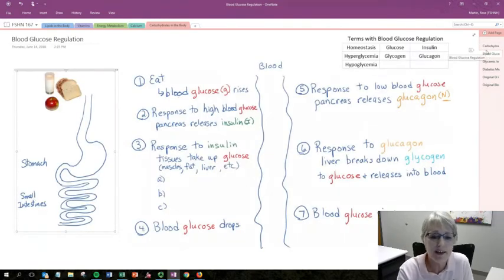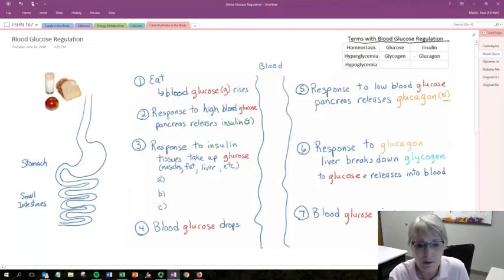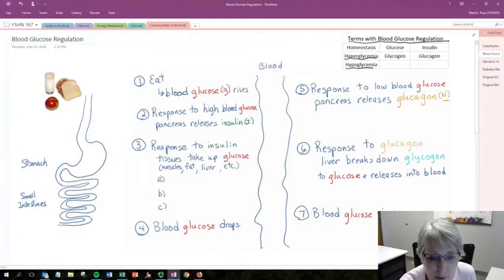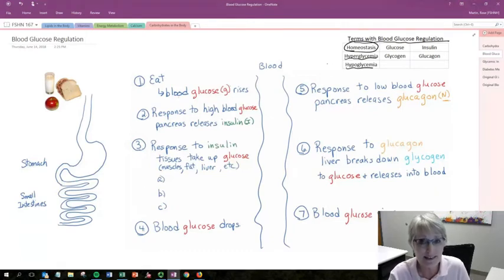On this graphic, I want to first have you note these different terms. I've got the terms for body glucose regulation. We've talked about hyperglycemia, hypoglycemia. The term homeostasis just means internal stability. Blood glucose regulation is a classic example of that.